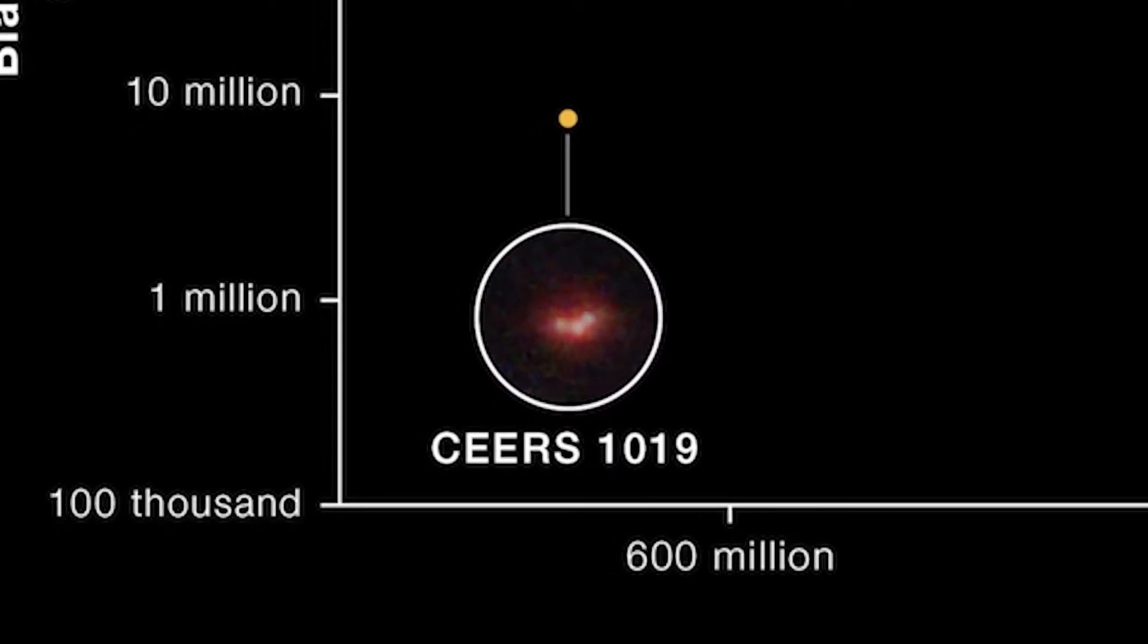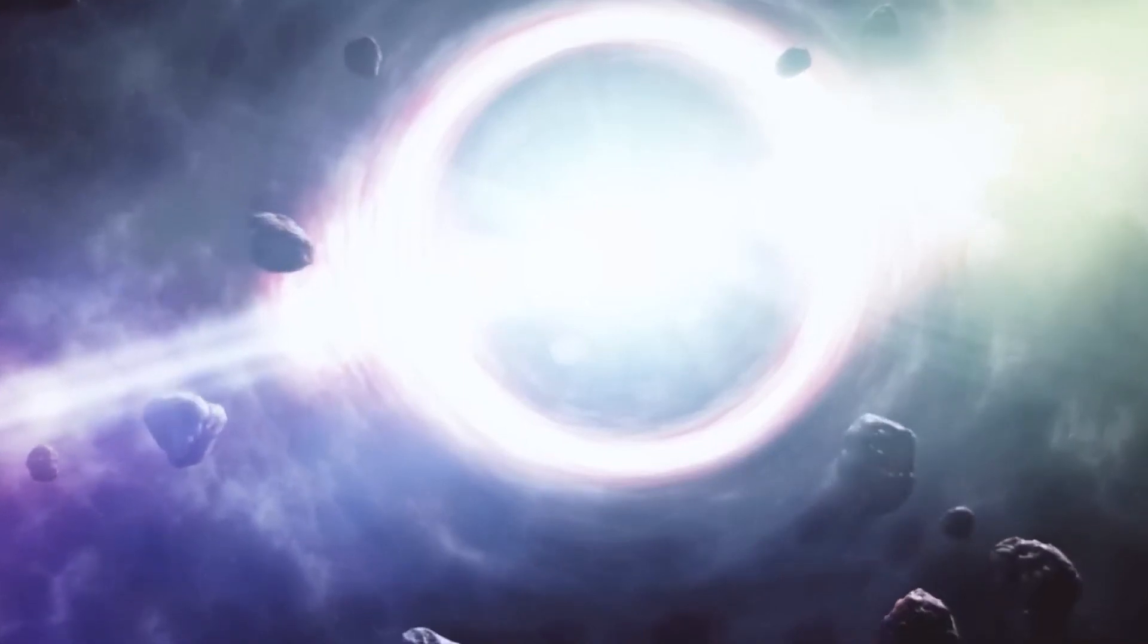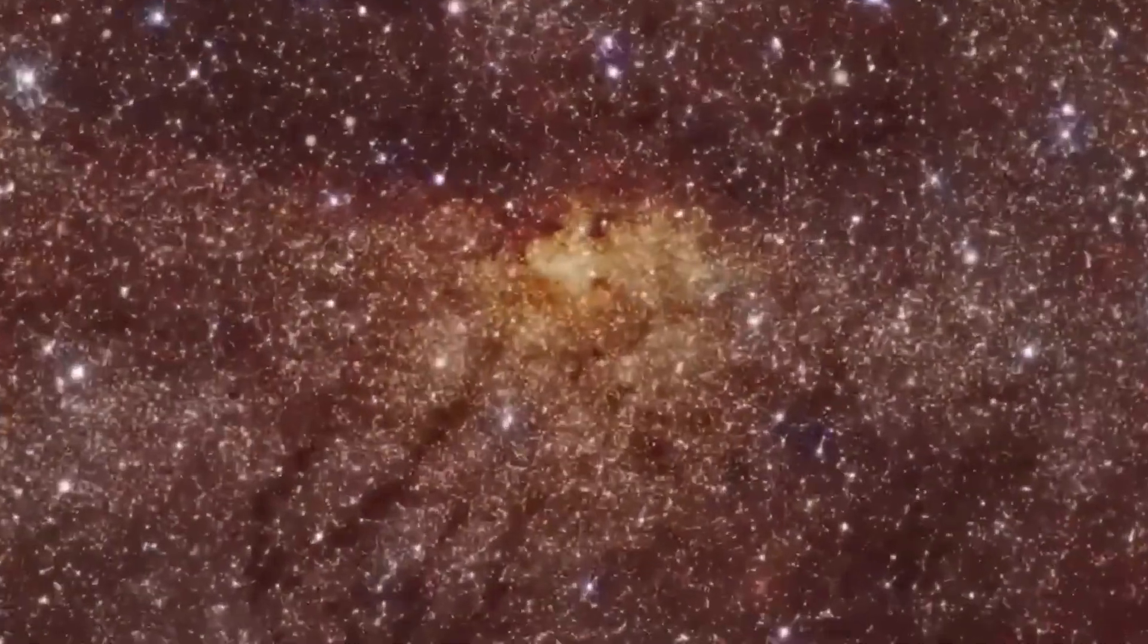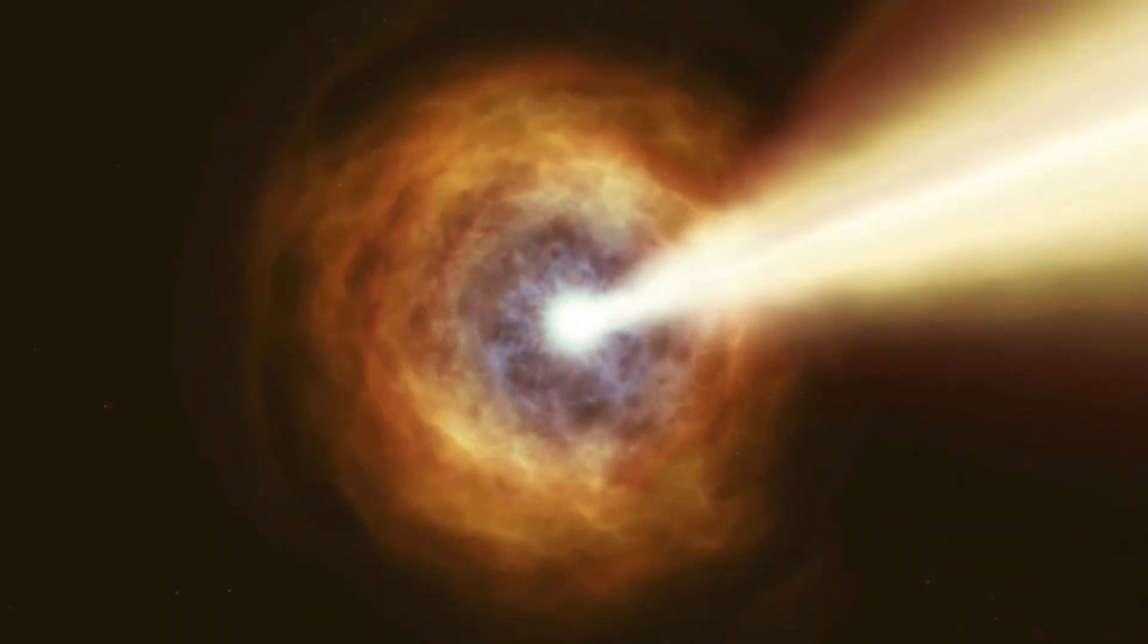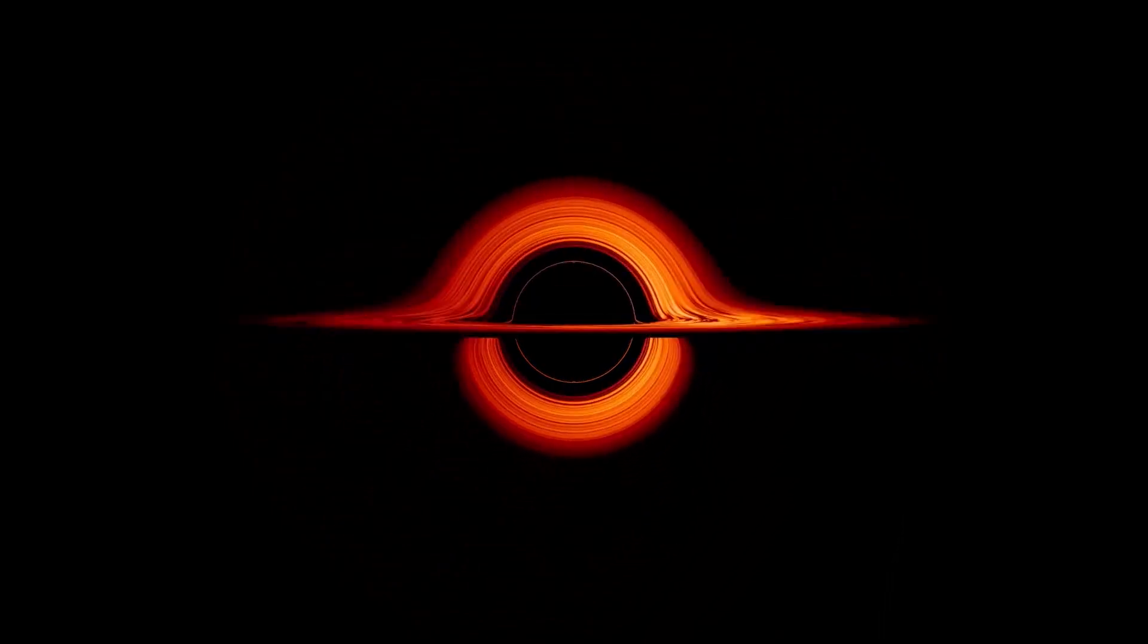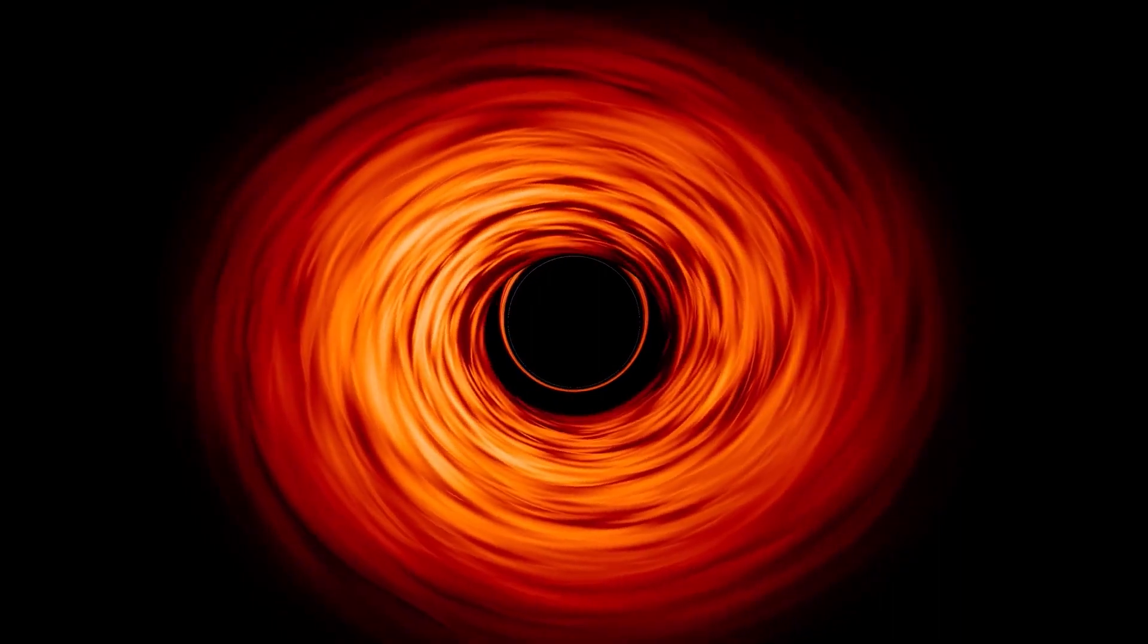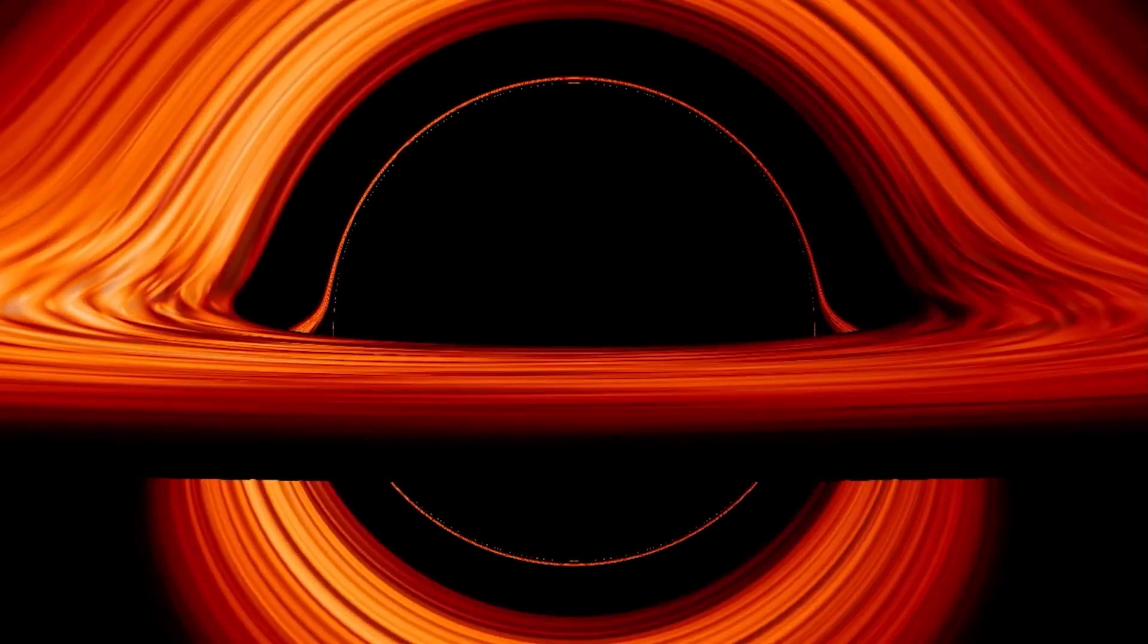This is because the processes by which supermassive black holes grow, either by mergers between successively larger black holes or by greedily feasting on surrounding matter, should take longer than the 570 million years this black hole took. This means that even black holes of the magnitude of the one at the heart of the Milky Way, which is around 4.5 million times the mass of the sun, should only be seen in the relatively nearby and therefore more recent universe.